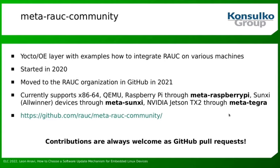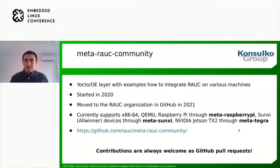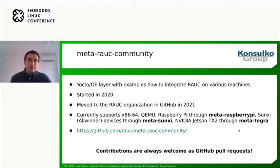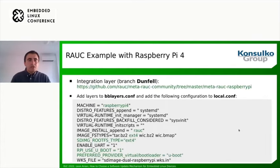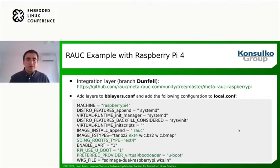In 2020, I started a Yocto layer called meta-rauc-community. This layer provides examples of how to integrate RAUC on several machines. Currently it supports x86-64, QEMU, Raspberry Pi through the meta-raspberrypi layer, Sunxi Allwinner devices through meta-sunxi, and NVIDIA Jetson TX2 through the meta-tegra BSP layer. Contributions are always welcome — if you have experience running RAUC on another hardware device, please contribute to meta-rauc-community.